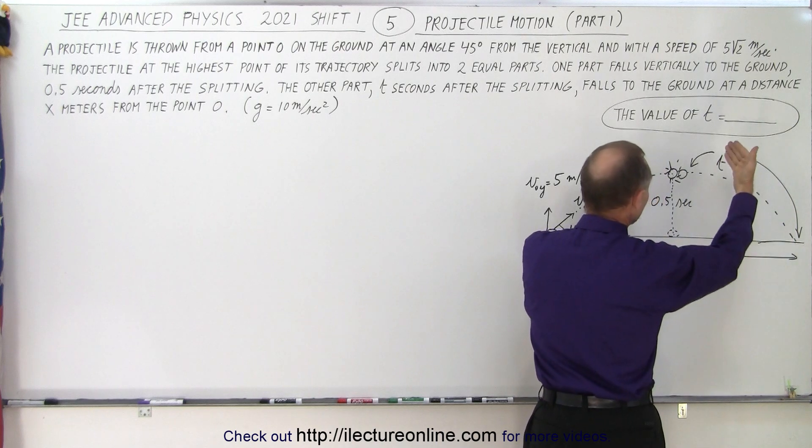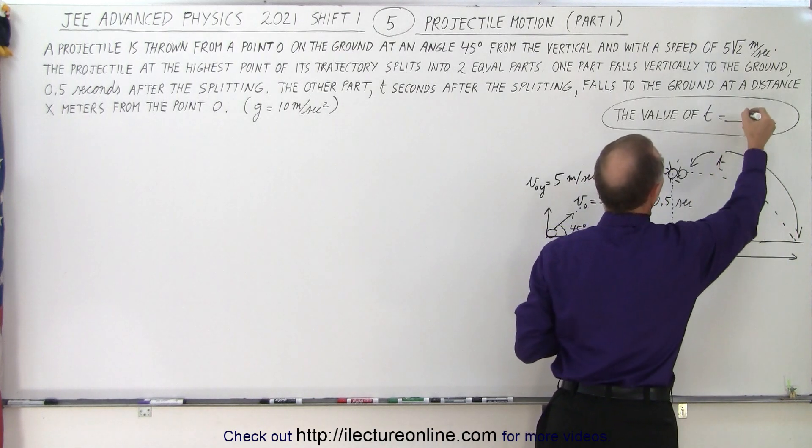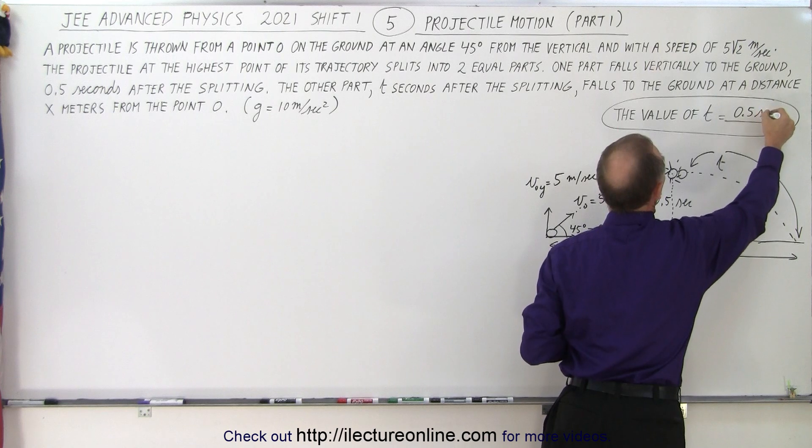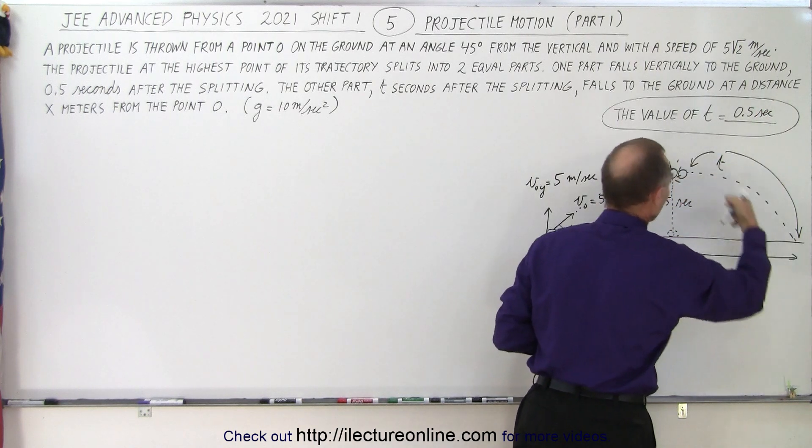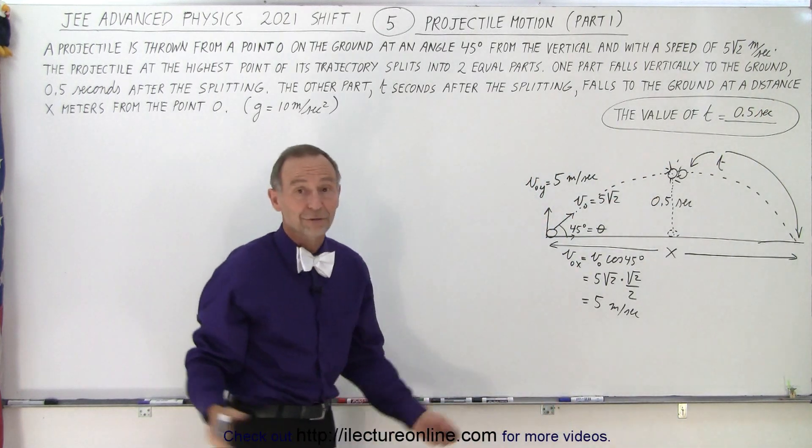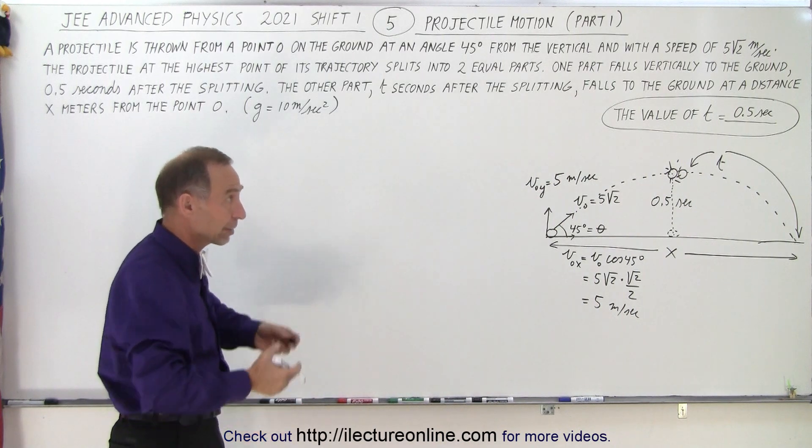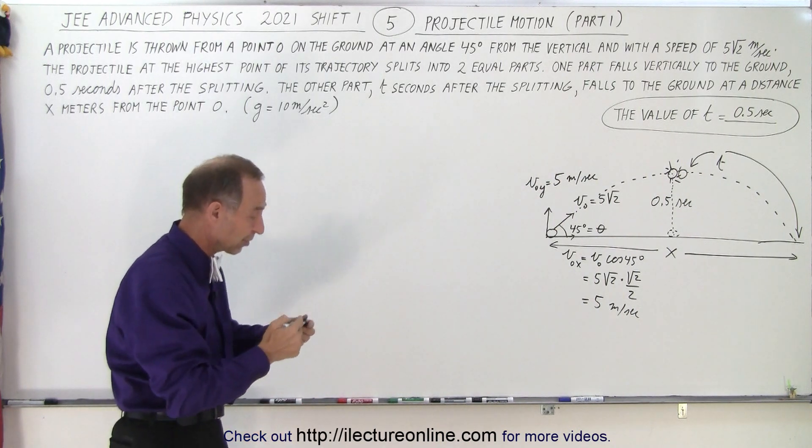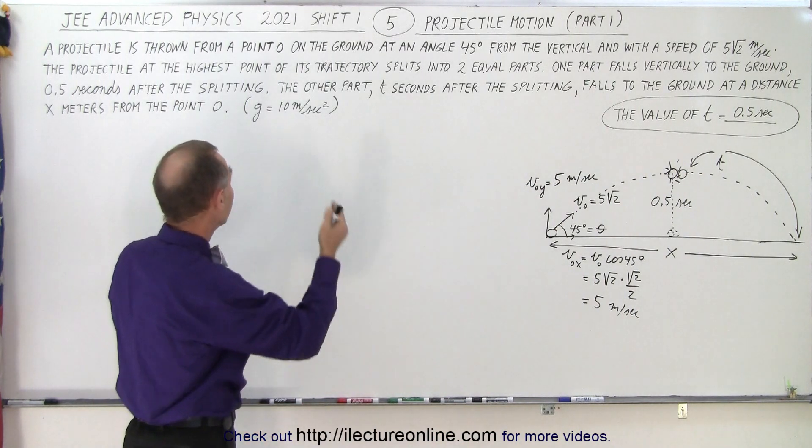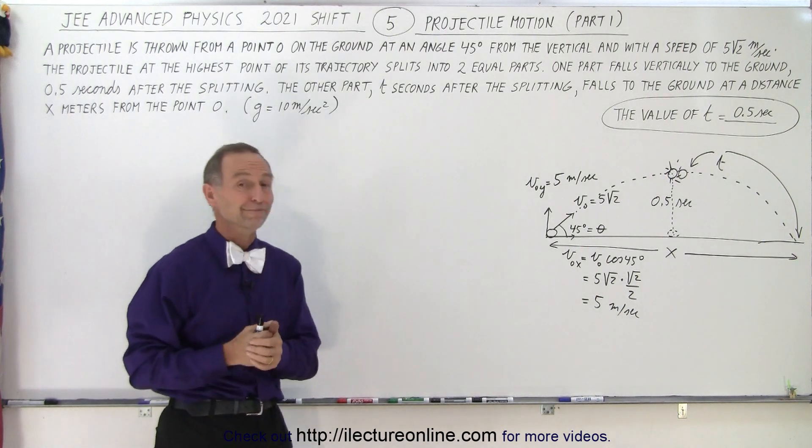So the answer for this particular case, the value of t, has to be the same 0.5 seconds for the second part to hit the ground, just the same as the first part. So in that respect, all you have to realize is that principle of projectile motion, and then automatically you get the first answer for part one.